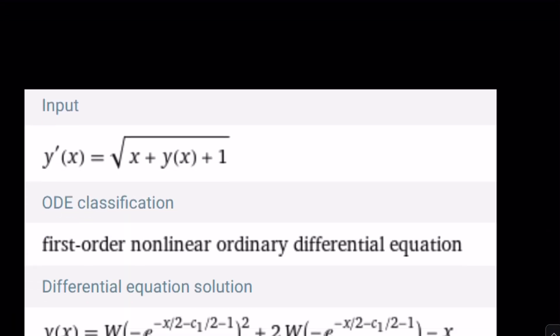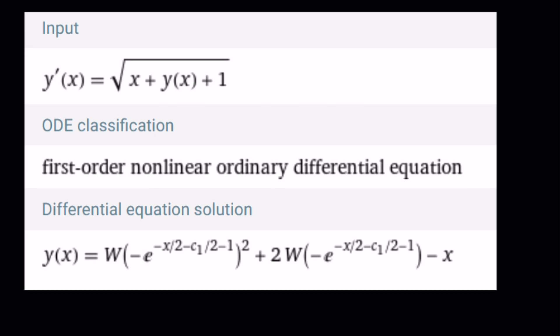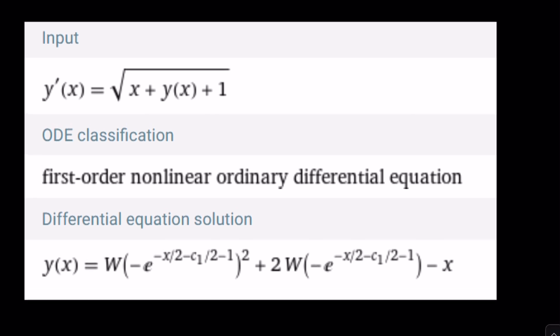So, Wolfram Alpha gives me the following solution, which is really cool, by the way. W is Lambert's W function. If you forgot what it was, Lambert's W function is basically the inverse function for x times e to the x. In other words, it takes x e to the x as input and gives us x as output. Make sense? It's kind of like extracts the x in that product.